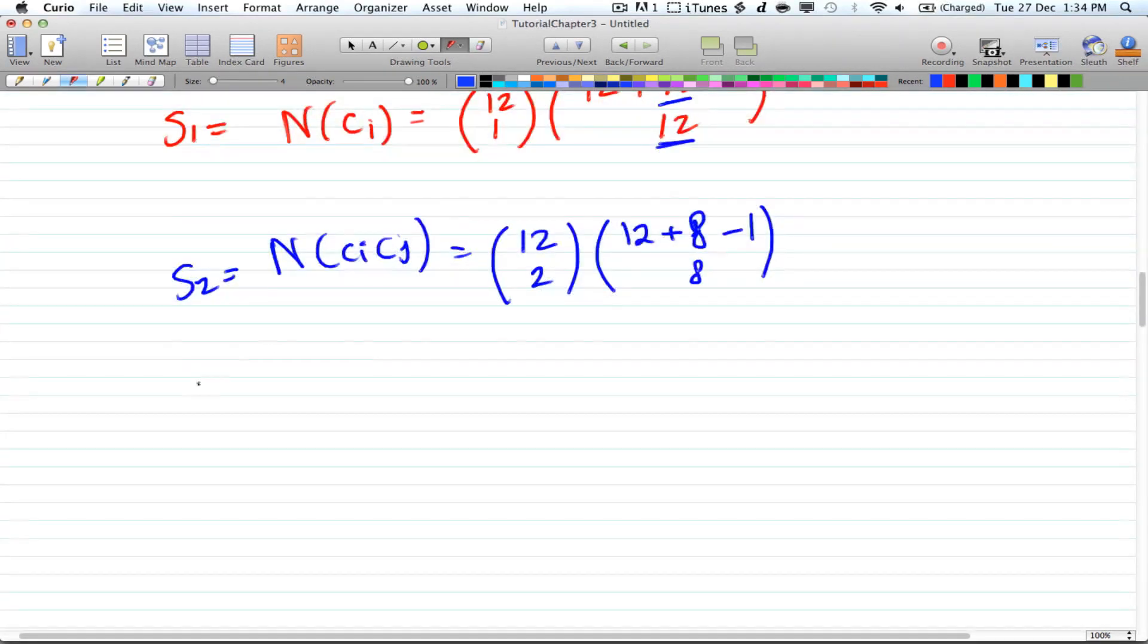And then finally you got s3, which is 3 objects, ci, cj, and ck. And here you're choosing 3 objects, but you're subtracting 4 times 3, 4 for each question. So you have 12 plus 4 minus 1, choose 4.